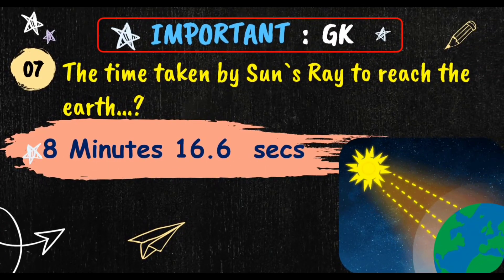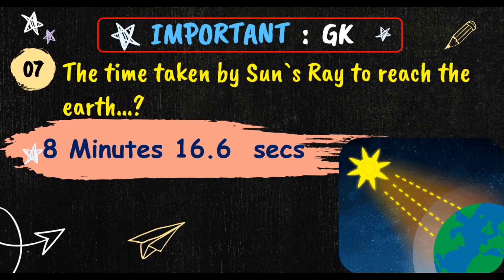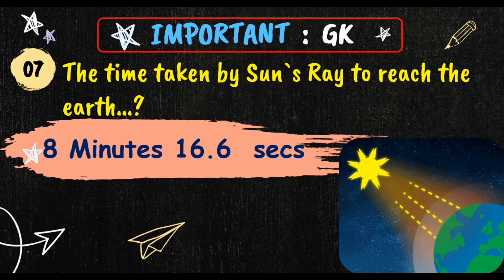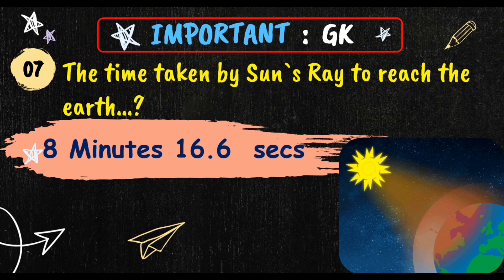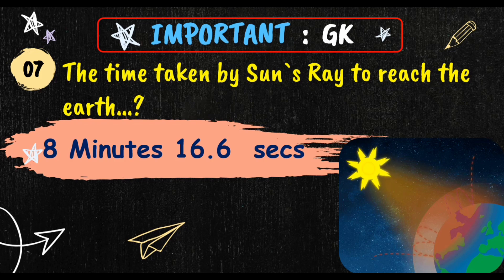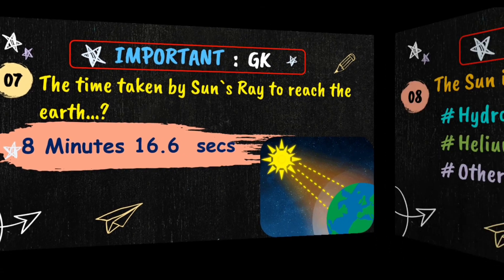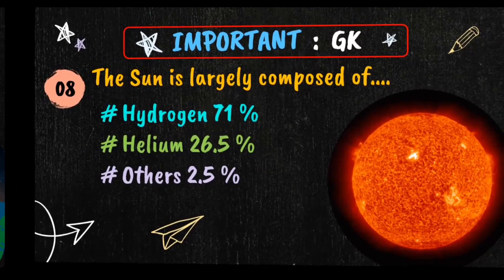The time taken by the sun's rays to reach the earth is 8 minutes 16.6 seconds. In some books, it has been given as 8.20 seconds and 8.30 seconds.